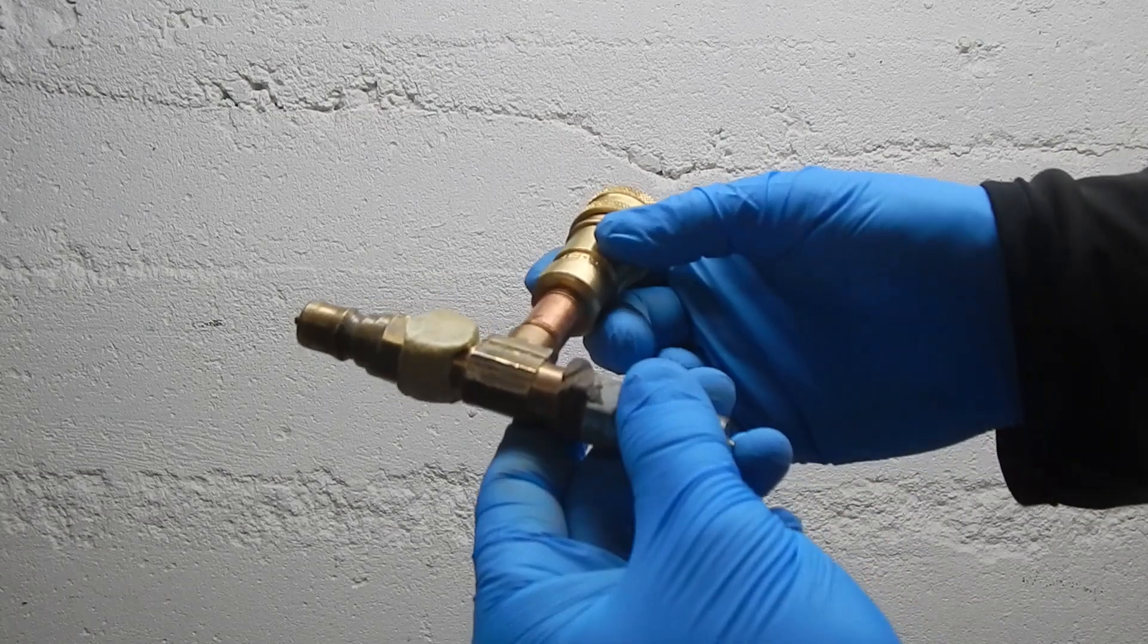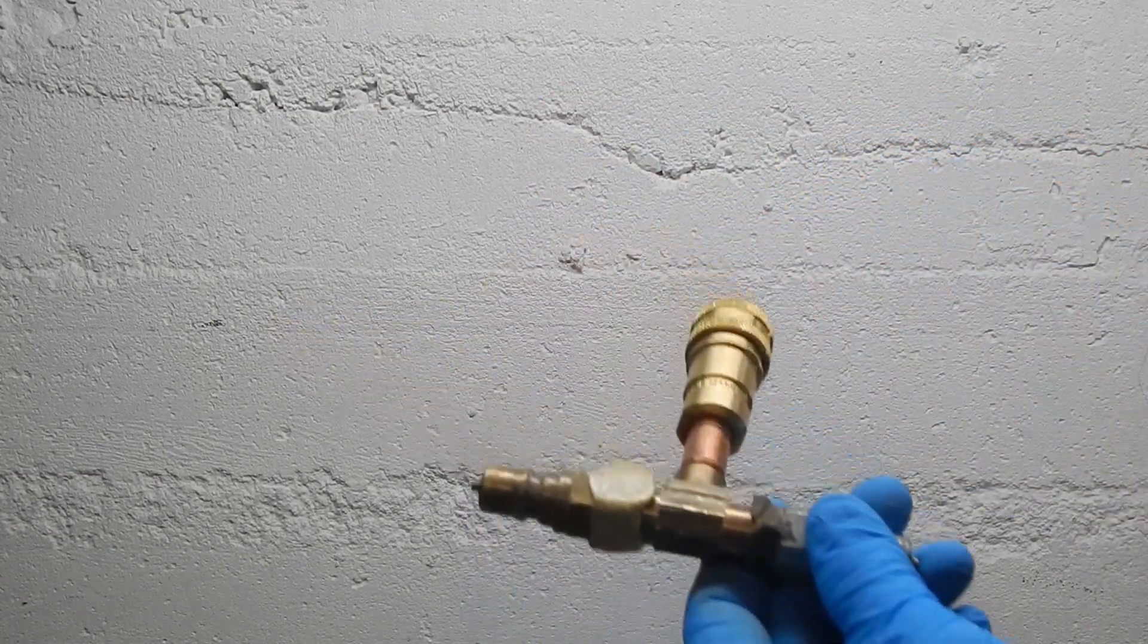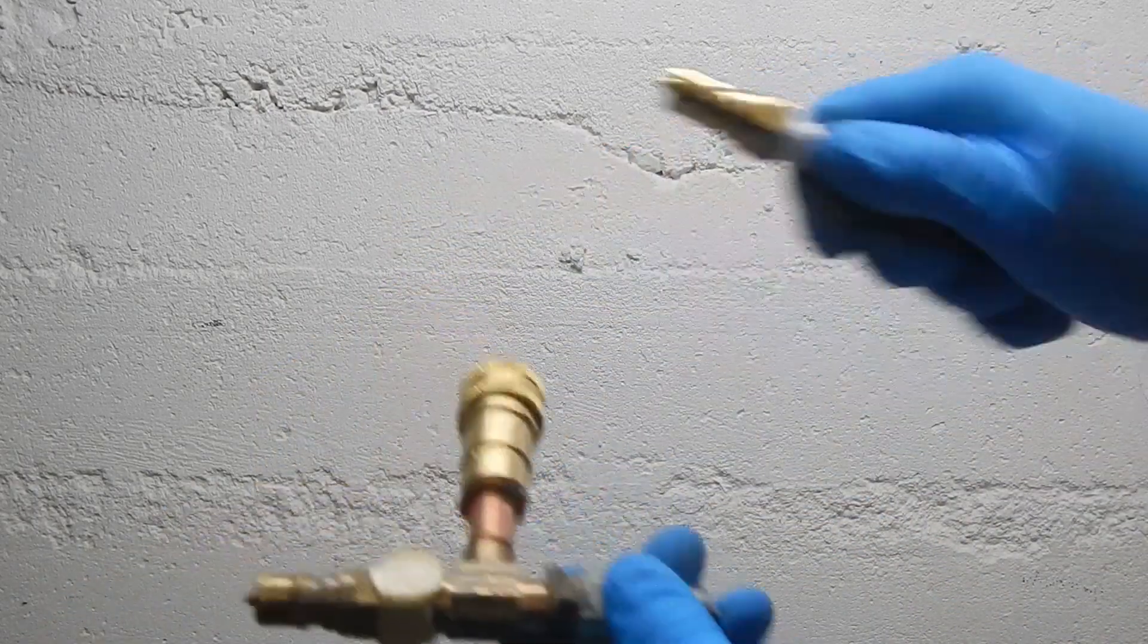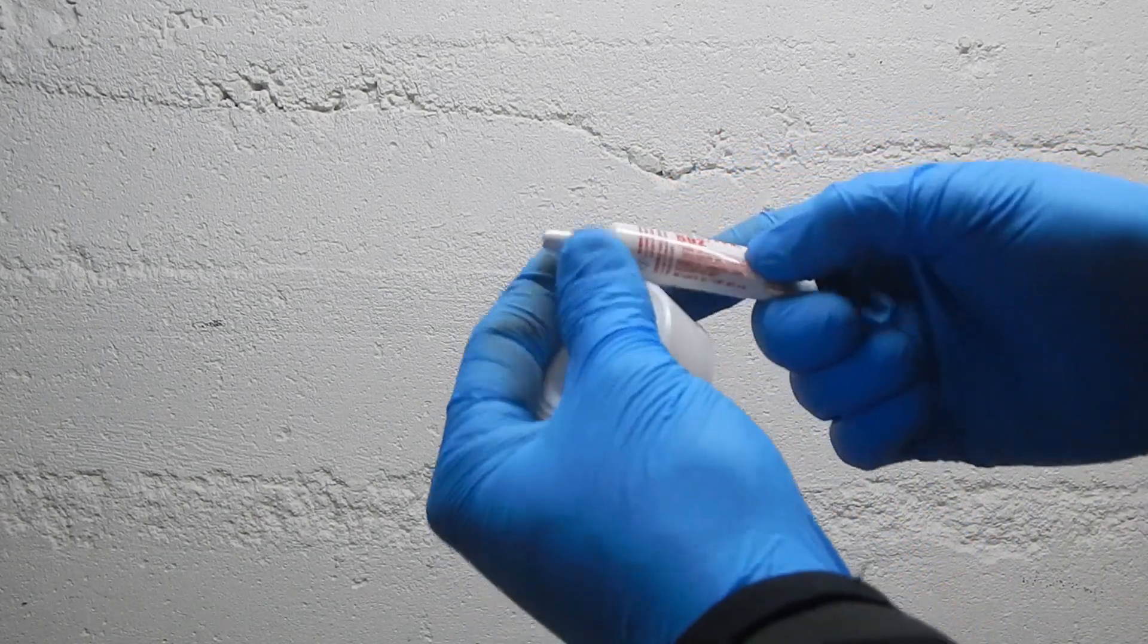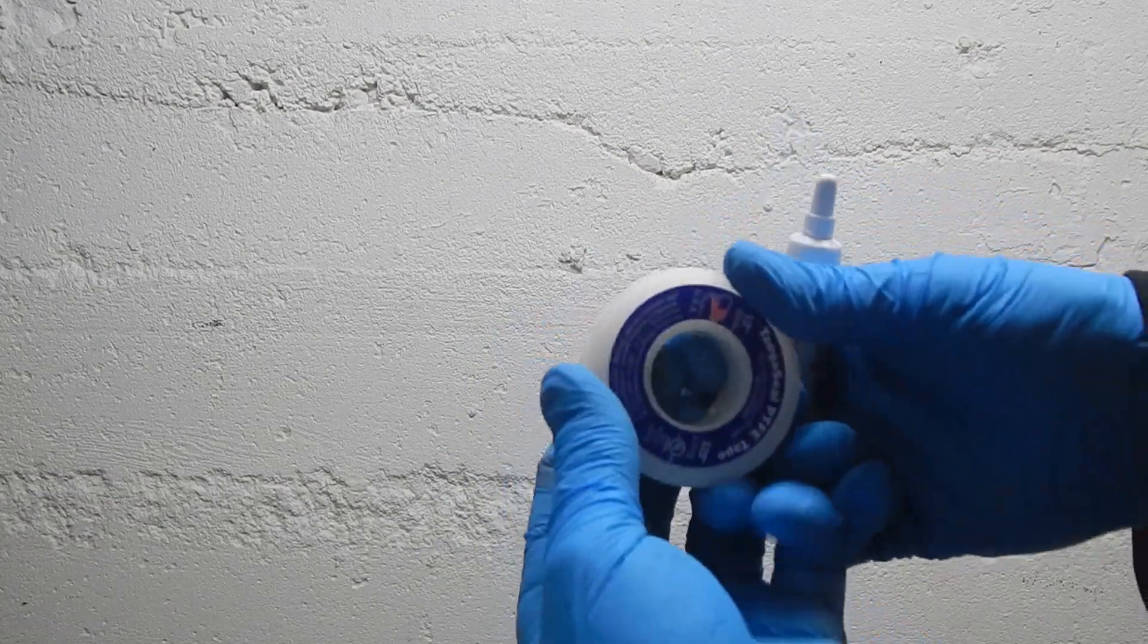So, threads. Pipe threads are designed to get tighter as you screw them in, but they also need some thread sealant to make them fully vacuum tight. Both PTFE tape and liquid thread sealant work okay. Brass fittings are nice because they are softer and less likely to corrode, get stuck together, and of course they're cheap.